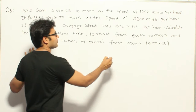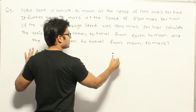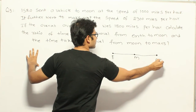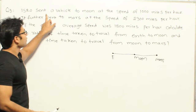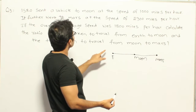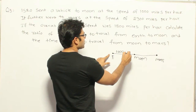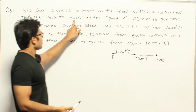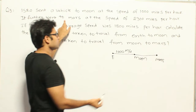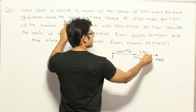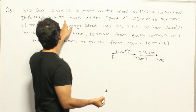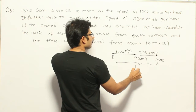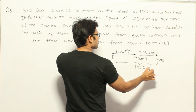We are sending a vehicle from Earth to Moon first, and then from Moon to Mars. The speed from Earth to Moon is 1000 miles per hour. The speed from Moon to Mars is 2300 miles per hour. For the entire trip, the overall average speed is 1800 miles per hour.